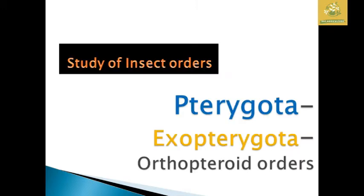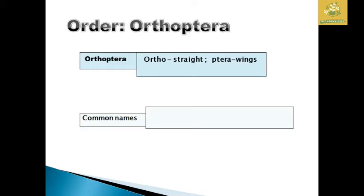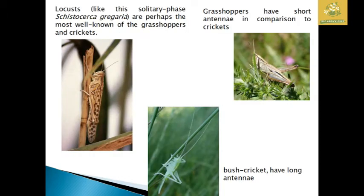I am going to cover the order Orthoptera. The name comes from 'ortho' meaning straight and 'ptera' meaning wings, so straight-winged insects are classified under Orthoptera. The common names include grasshopper, locust, katydid, cricket, and mole cricket. Examples include locusts, green grasshoppers, and bush crickets.